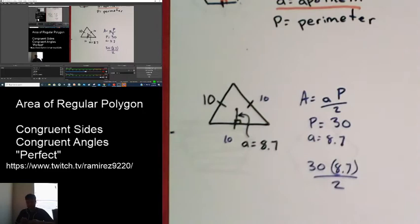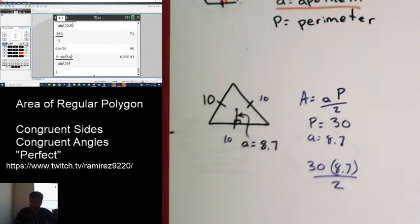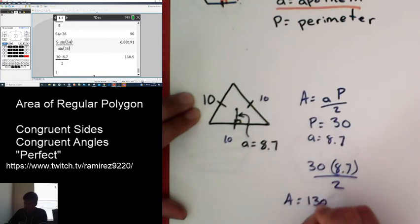So again, this formula, it's very basic when you know your info, obviously. So 30 times 8.7 divided by 2. So the area of this triangle is 130.5 units squared. And that's it.